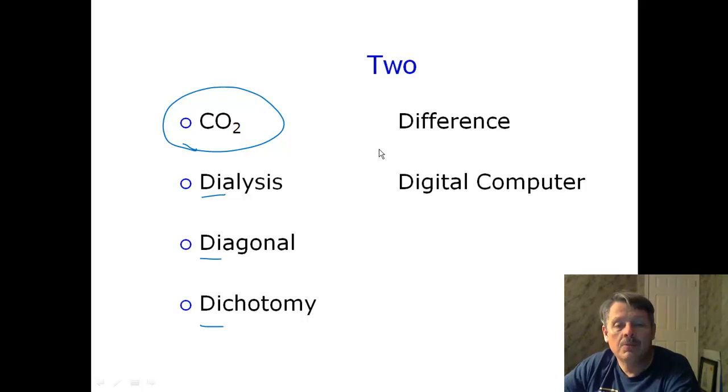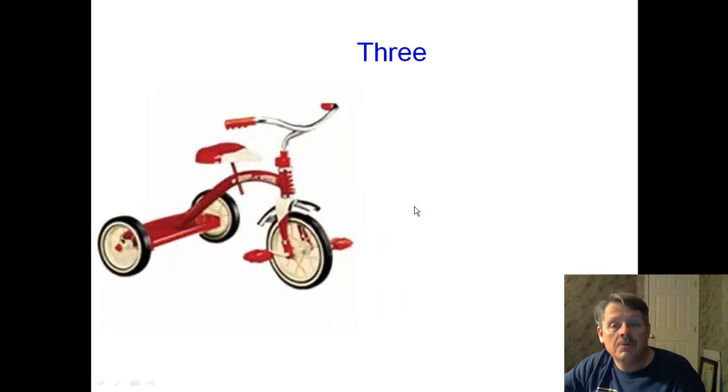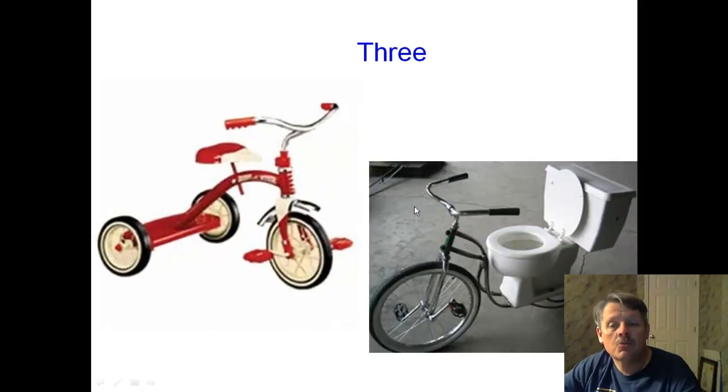Dichotomy, you have two choices. Difference is the difference between two numbers. Digital computers are all about things that are either on or off. Again, that's two things. Number three, you've heard that prefix. That's called tri for tricycle. My favorite tricycle on the right. So you should understand the prefix three for tri.